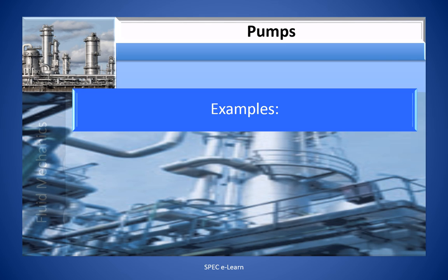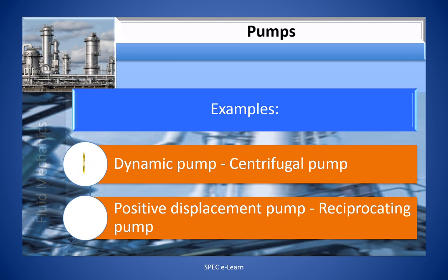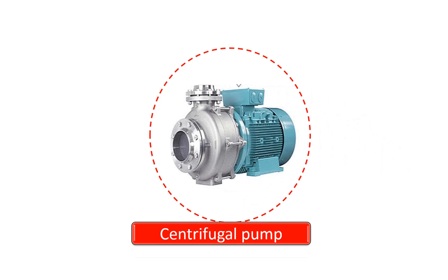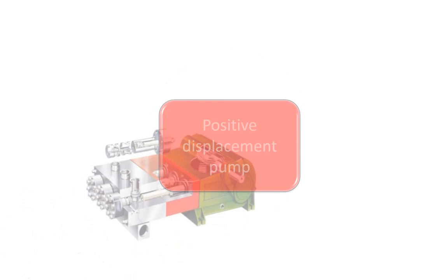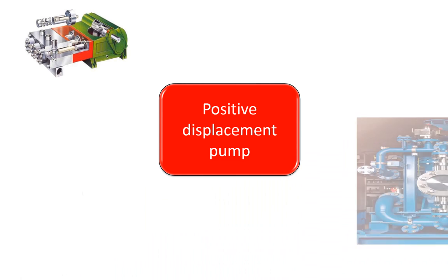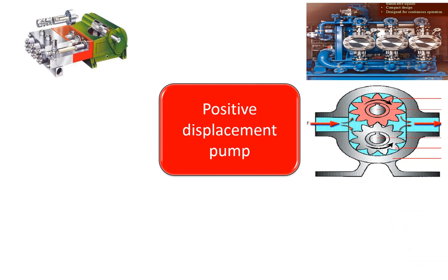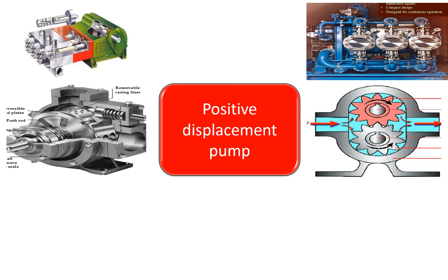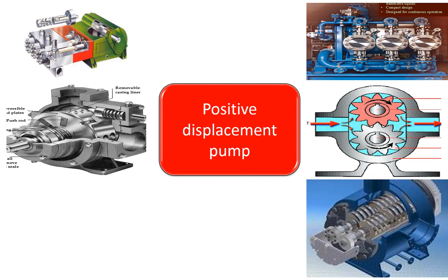An example of a dynamic pump is a centrifugal pump. An example of a positive displacement pump is a reciprocating pump. Shown here are pictures of dynamic pumps and positive displacement pumps. The only dynamic pump used in refineries, petrochemical plants and several other process industries is the radial or centrifugal pump. There are several positive displacement pumps to choose from depending on the nature of applications and operating conditions.